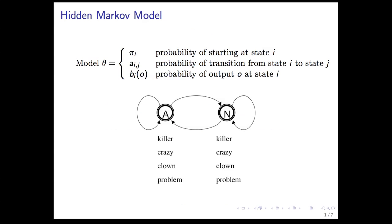As before, to refresh your memory, HMM consists of a probability of starting at a state i, a transition probability, and an emission probability. So each state can emit any of the words in the vocabulary.